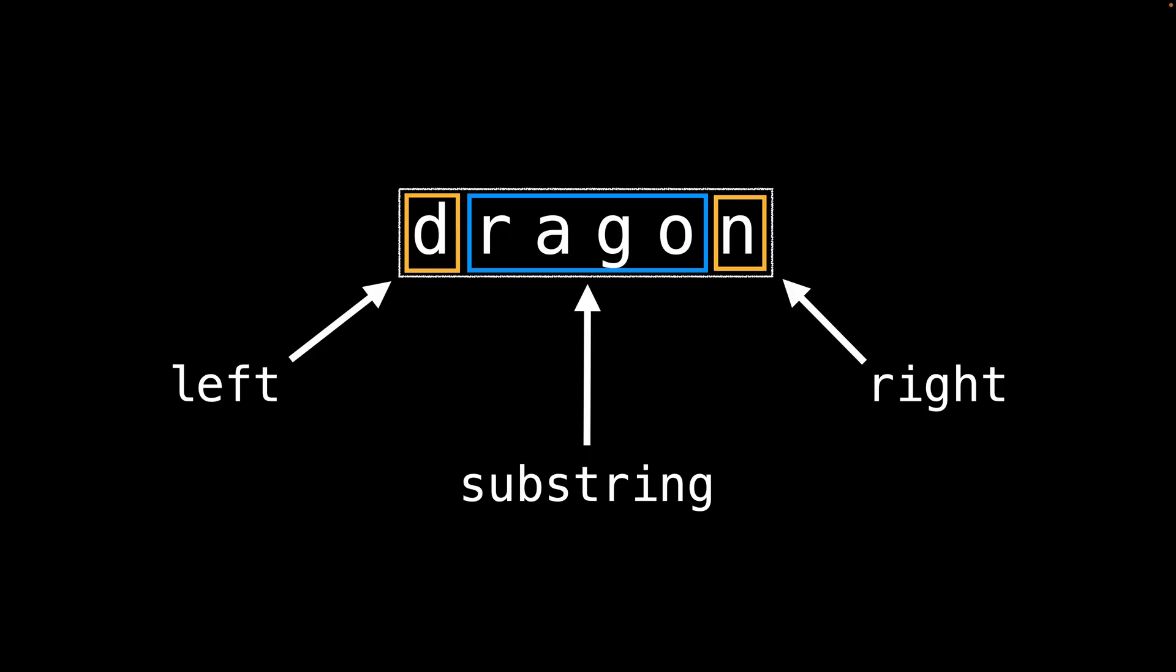If you were to visualize the variable assignments from the pseudocode, left corresponds to the leftmost character, substring to the inner blue segment, and right to the rightmost character of the string.